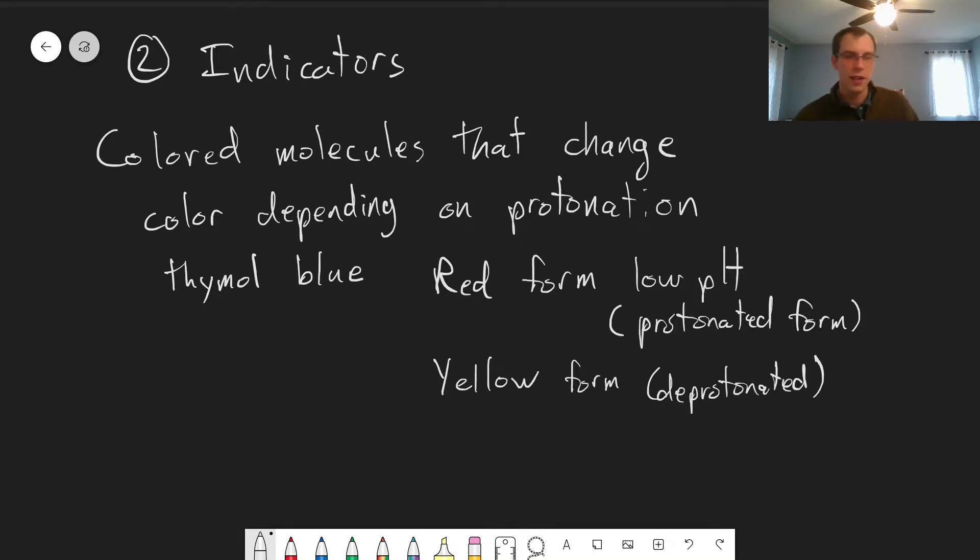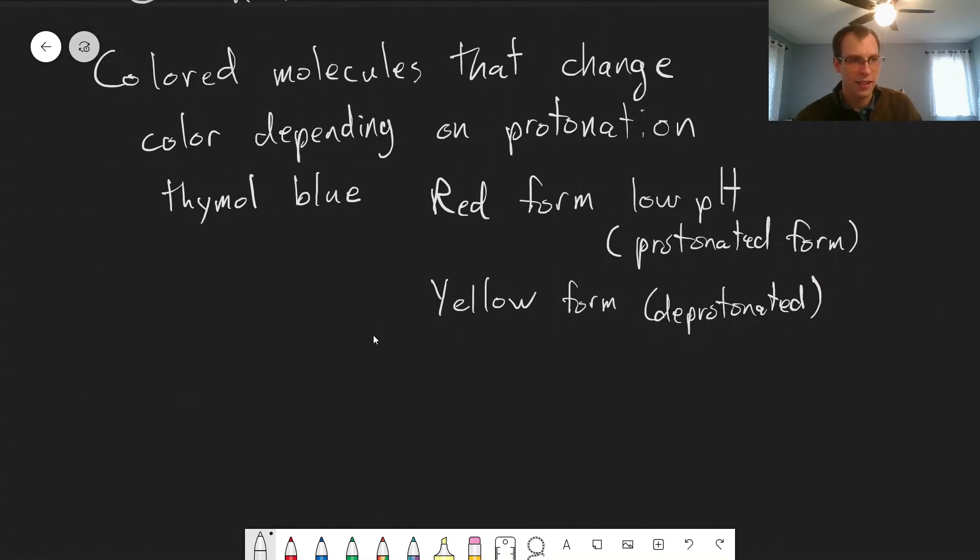And we can get an idea of what's going to happen in terms of colors by looking at the pKa of this acid. So we can look this up in a table. The pKa for this particular acidic form, again there are more than one for this, is equal to 1.7.